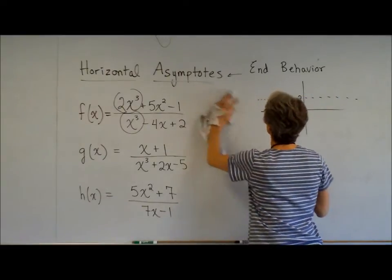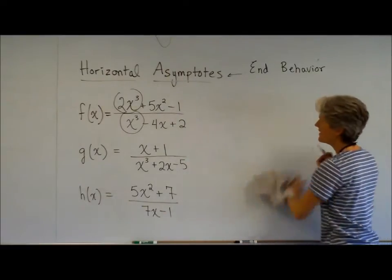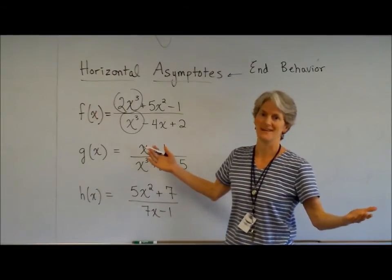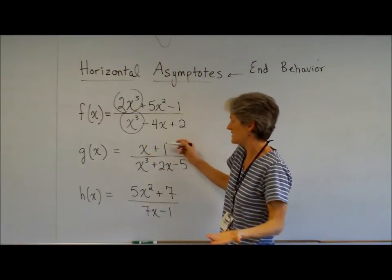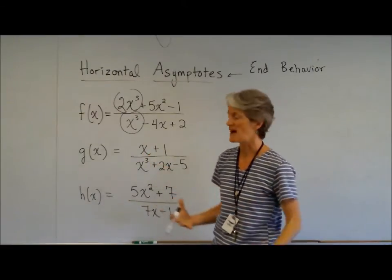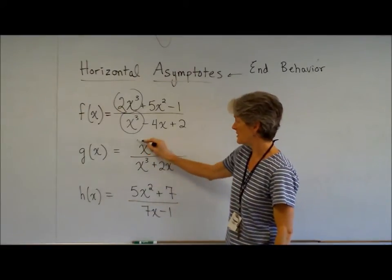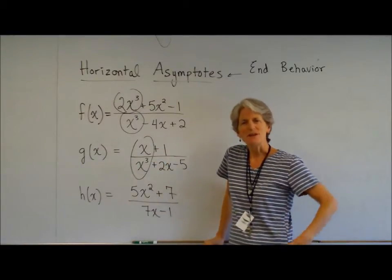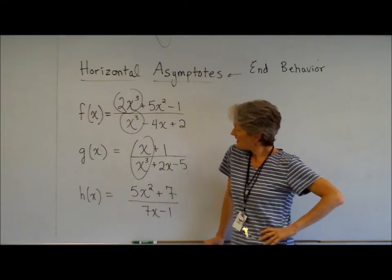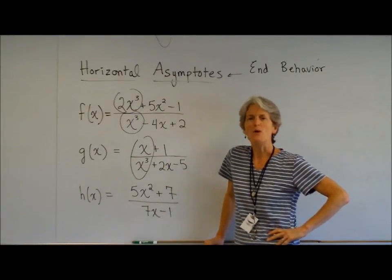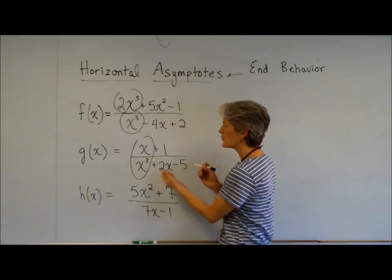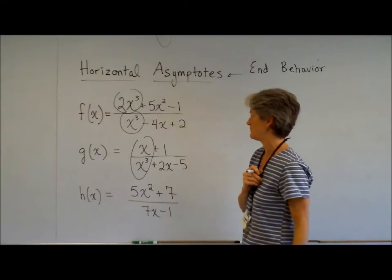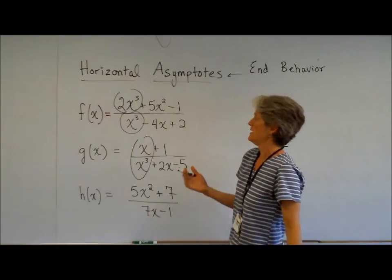So we move on to G of X. The controlling term in the numerator? It's got to be X — that little plus 1 isn't going to affect anything when I'm plugging in sizable X's. Controlling term in the denominator? X cubed. So again, I'm going to zero in on these and say, what Y values am I approaching when I'm plugging in pretty big X's or really, really negative X's?